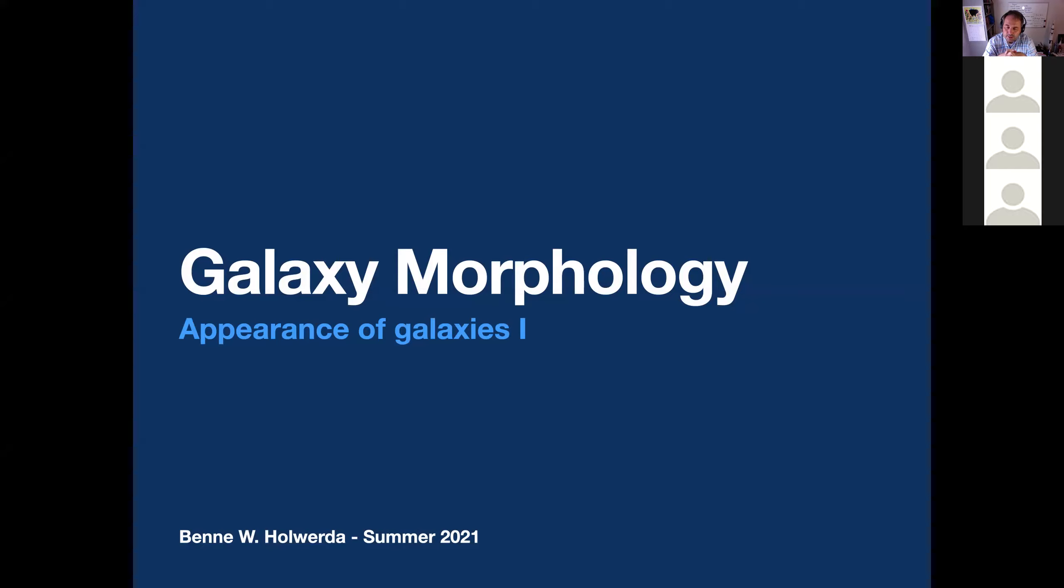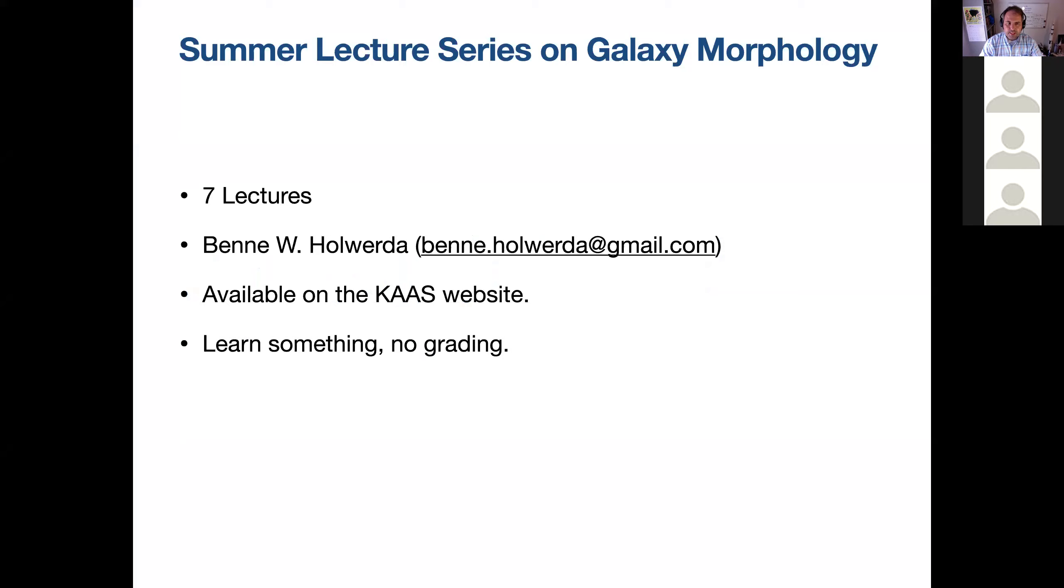Welcome to the Kentucky Area Astronomical Society's summer lecture series. I'll talk about galaxy morphology for the next seven classes. Today we'll talk about the appearance of galaxies, class one. The plan is to have seven lectures to take a single topic within galaxy morphology and talk about it in detail. Today is just the overview of what galaxies look like. You can always email me. I will be making recordings available on the CAS website. You're just here to learn something. There's absolutely no grading. This is the lowest stress level of the year, hopefully.